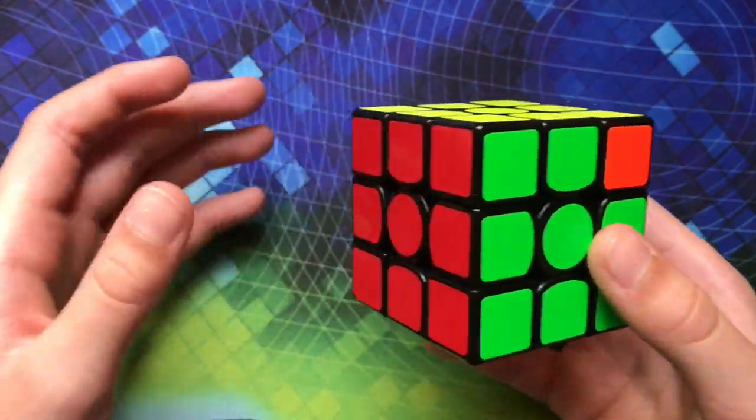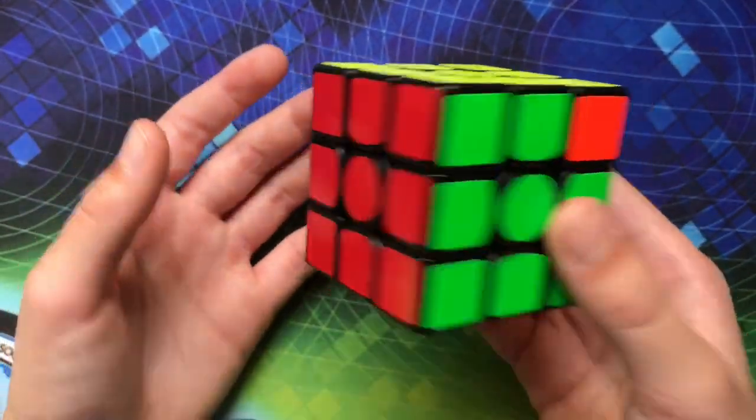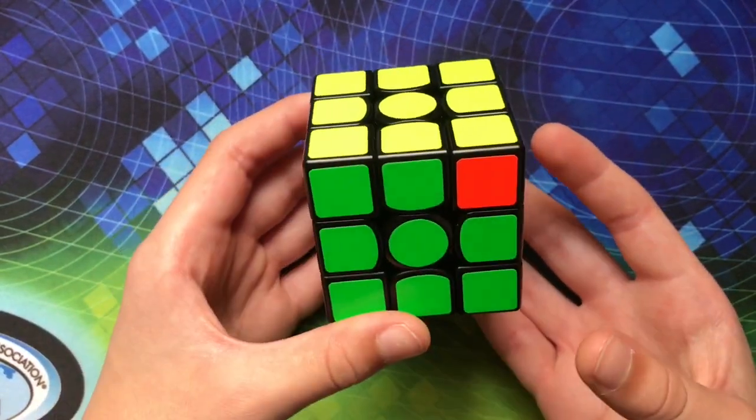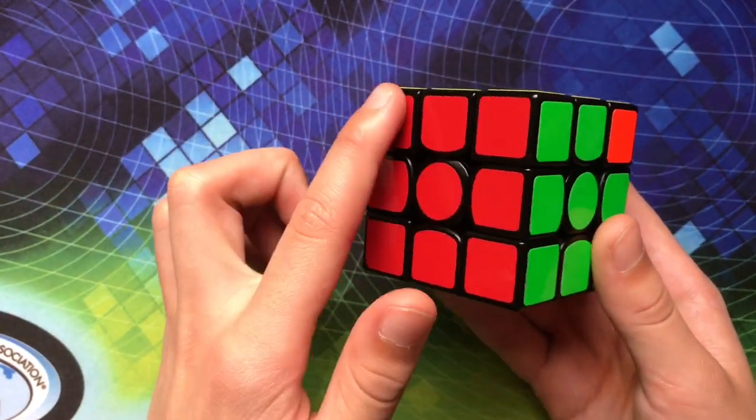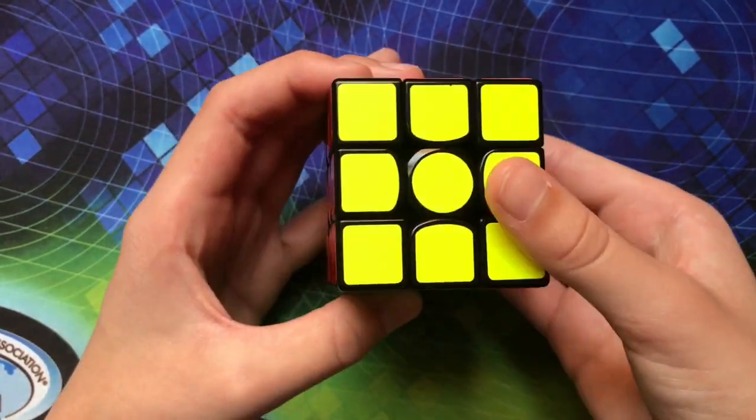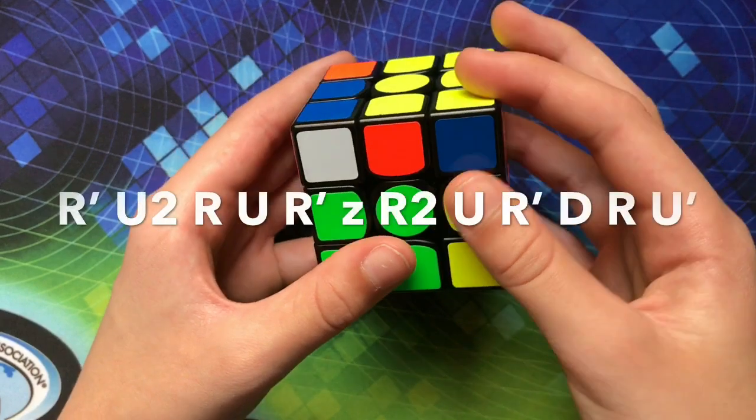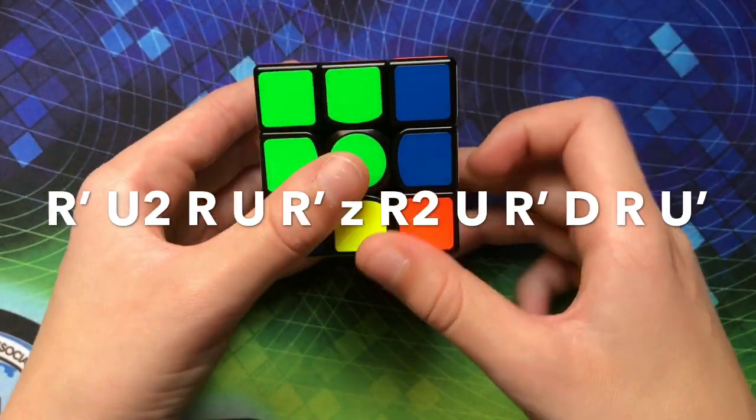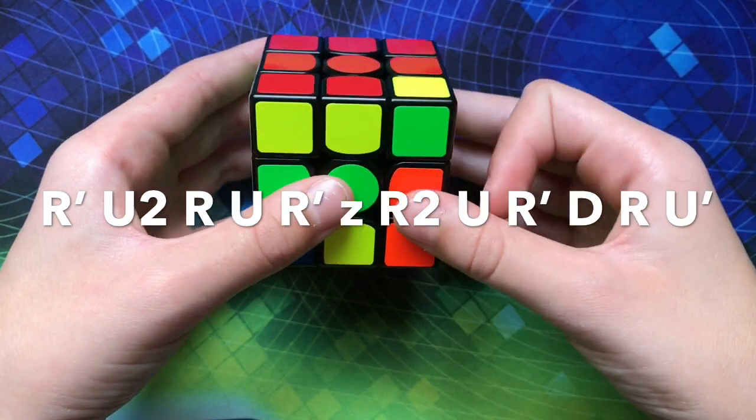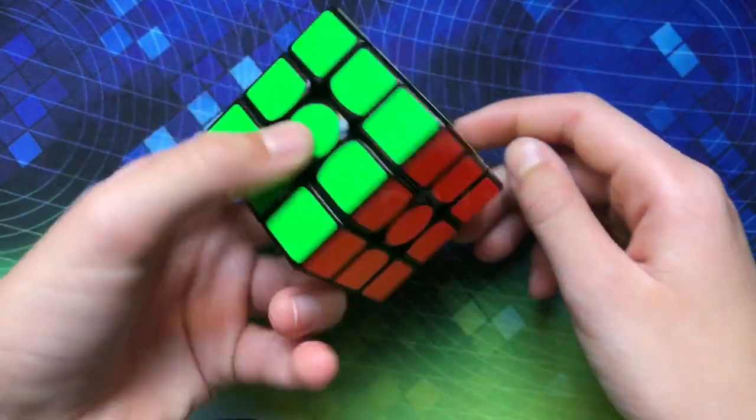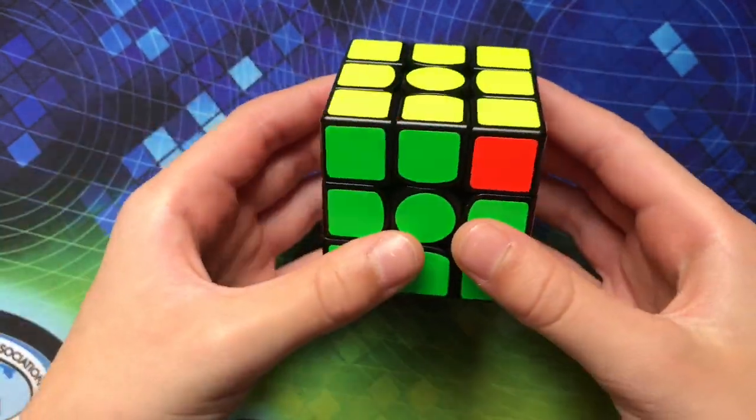Okay so this next algorithm is actually pretty weird and I actually used to use it. So this one actually has a rotation in it and here it is. So you hold the bar on the left and then you do this algorithm. You do R' U2 R U R' Z R2 U R' D R U'. So here's that one quickly.